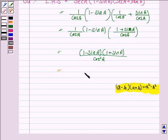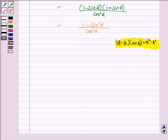So this is equal to 1 square, that is 1 minus sine square A upon cos square A. And 1 minus sine square A is cos square A upon cos square A. So cos square A upon cos square A is equal to 1. This is RHS. Hence proved.